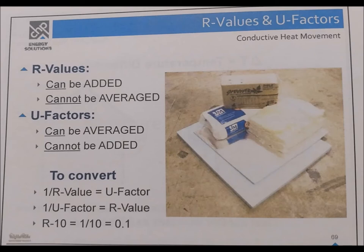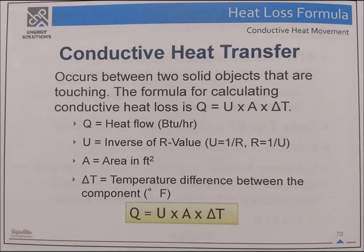Heat loss formula. Conductive heat transfer occurs between two solid objects that are touching. The formula for calculating conductive heat loss is Q equals U times A times delta T.